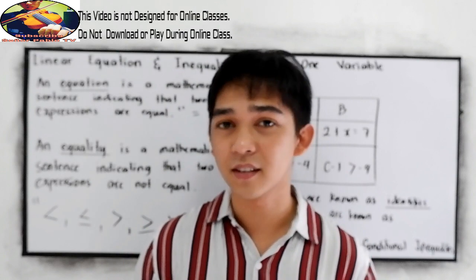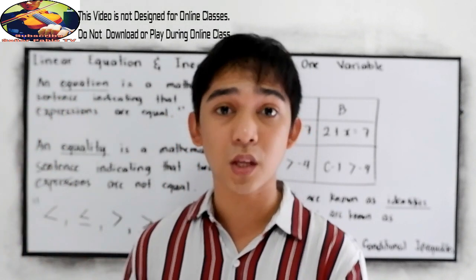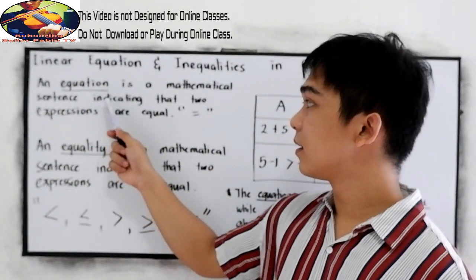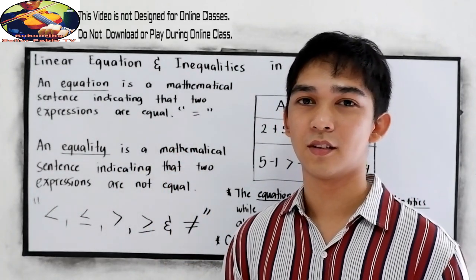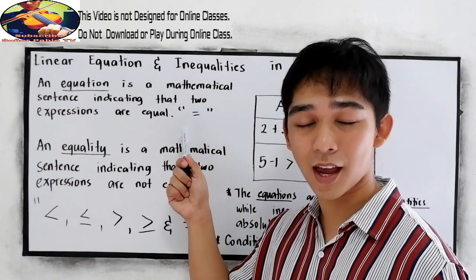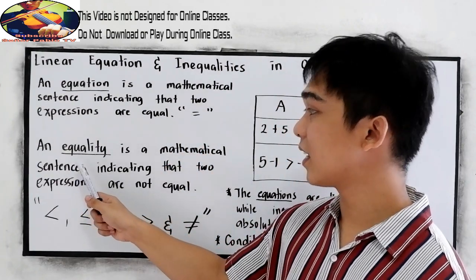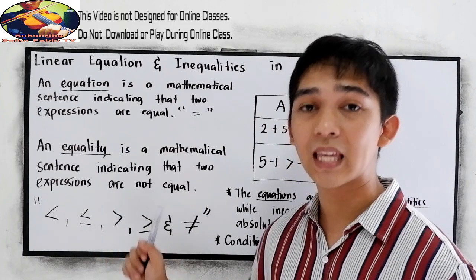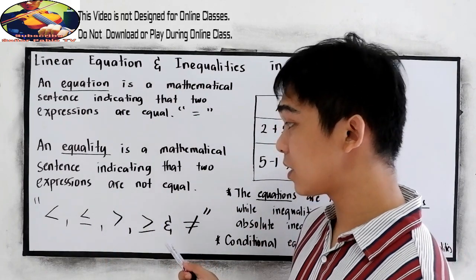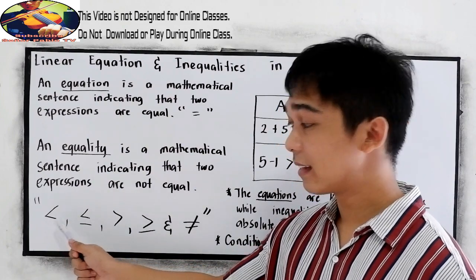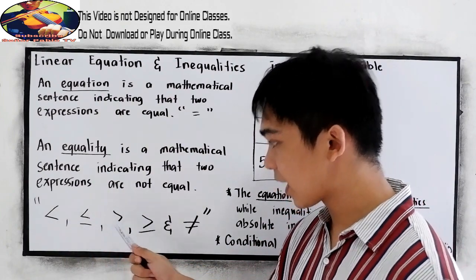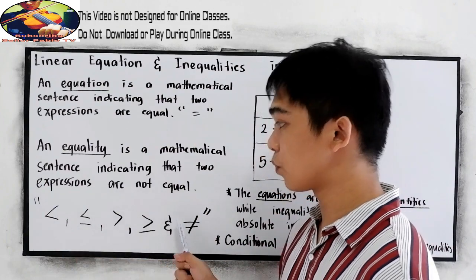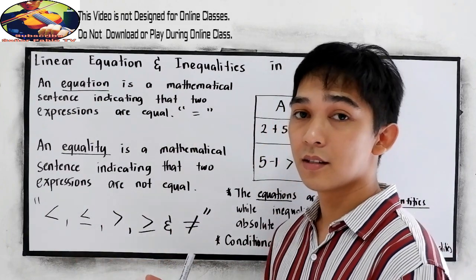Let us first define equations and inequalities and the differences between the two. An equation is a mathematical sentence indicating that two expressions are equal, and we use the equal sign. An inequality is a mathematical sentence indicating that two expressions are not equal. The symbols used to express inequality include: less than, less than or equal to, greater than, greater than or equal to, and not equal to.